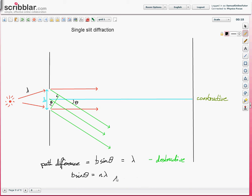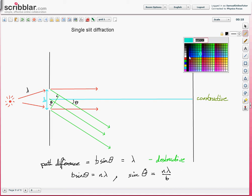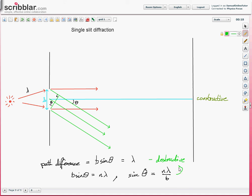Usually written this way, sine theta equals n lambda over B. That gives us destructive interference, and will give us a minimum amplitude on the screen. Apart from n equals zero. When n equals zero, that's straight ahead. Theta equals zero. That's constructive. For any other integer value of n, destructive interference.